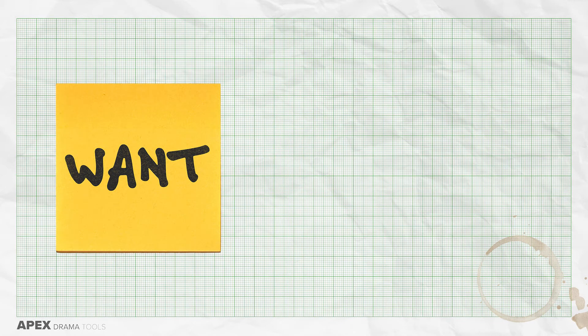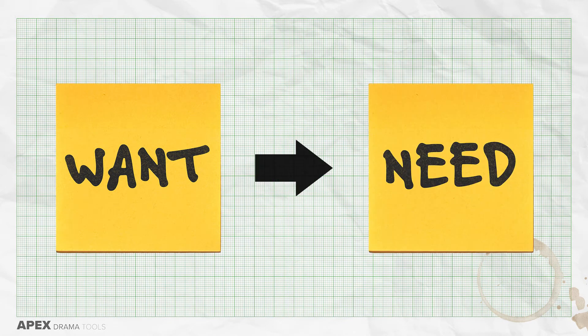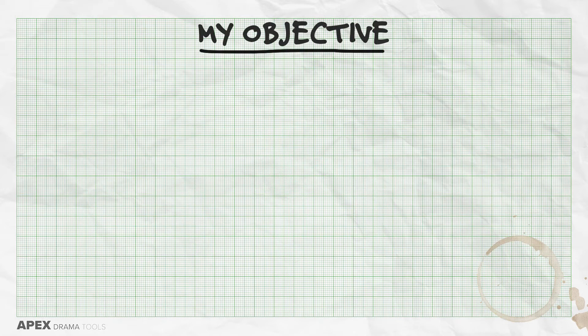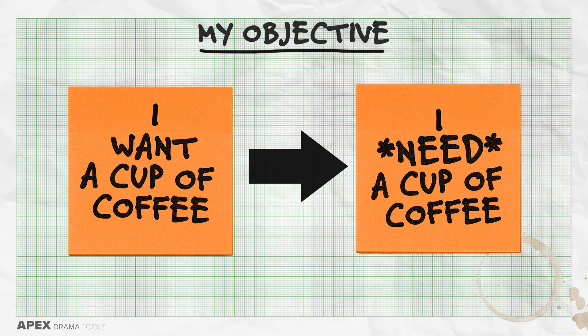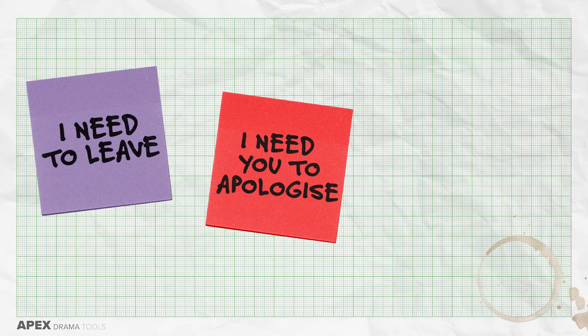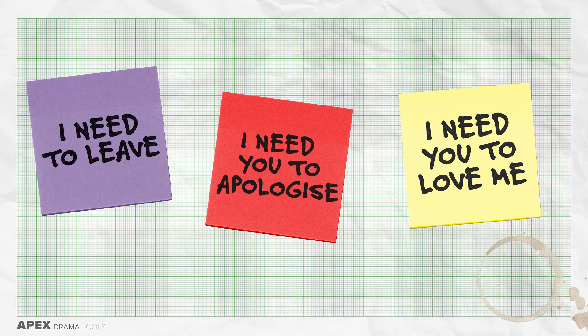Objectives are sometimes called wants, but I prefer the word need. Take this sentence: I want a cup of coffee versus I need a cup of coffee. The word need makes it feel urgent and the stakes are increased. I want feels incidental and small — like I want a Mars bar or I want to go outside. I need feels vital and pressing: I need to leave, I need you to apologize, I need you to love me. These all feel critical and active. The word want suggests you're in control of it, whereas the word need suggests that it's in control of you. We will always work harder to achieve an objective if it's something that we need.